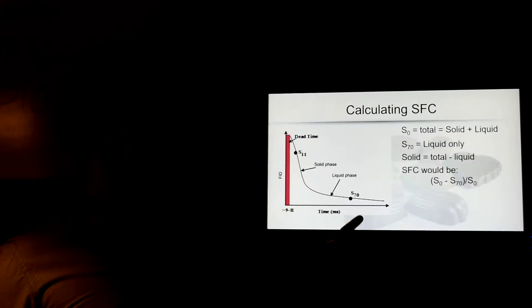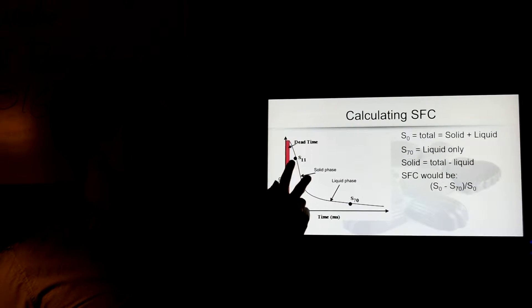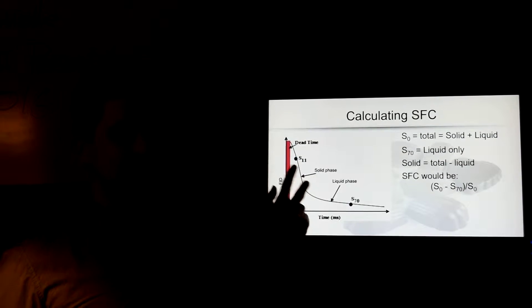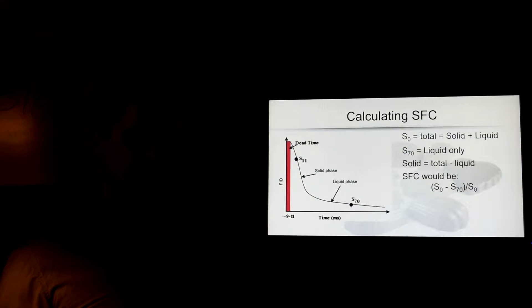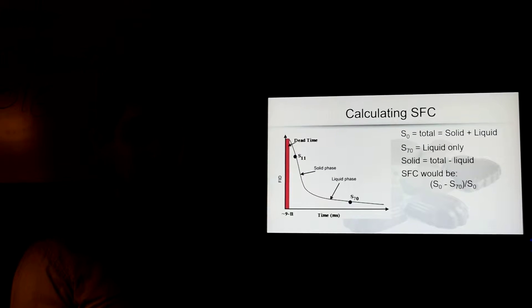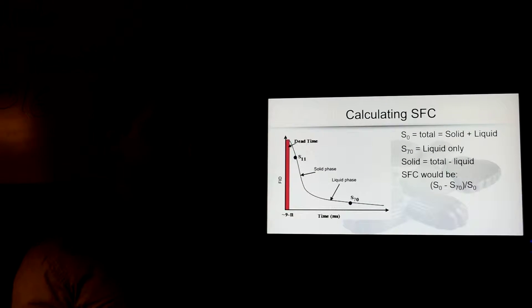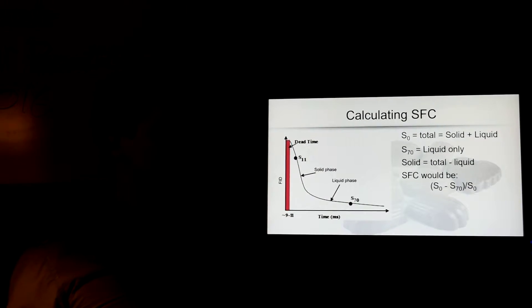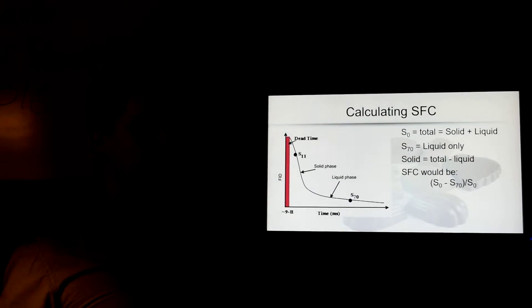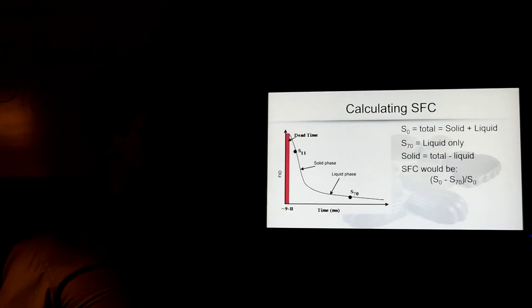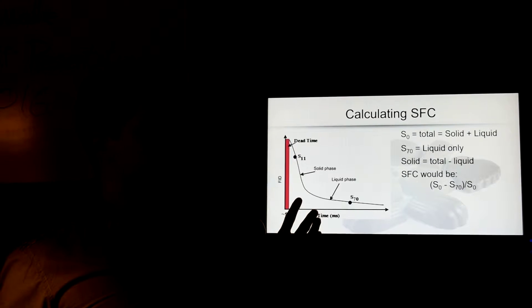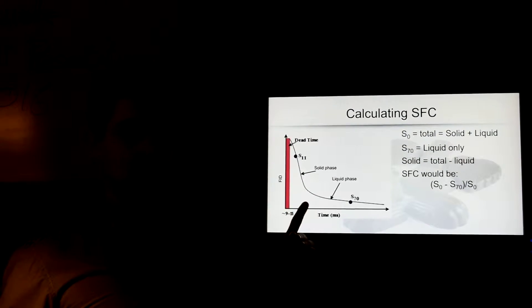We also have to add a correction factor at the beginning, because we can't measure the first 9 to 11 milliseconds. That's because when you hit your atom with the radiofrequency pulse, it gets stunned and kind of shakes around and resonates for a bit. So we start at about 11 milliseconds. To compensate for that, we're going to add a quick correction factor on the solids only, not the total.